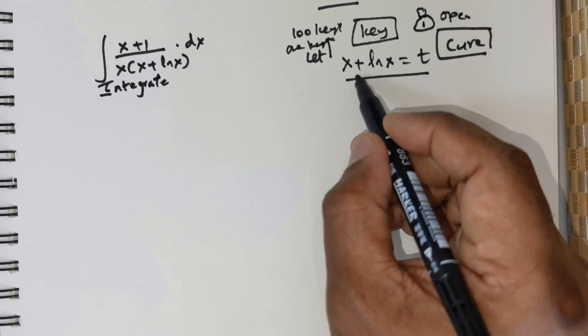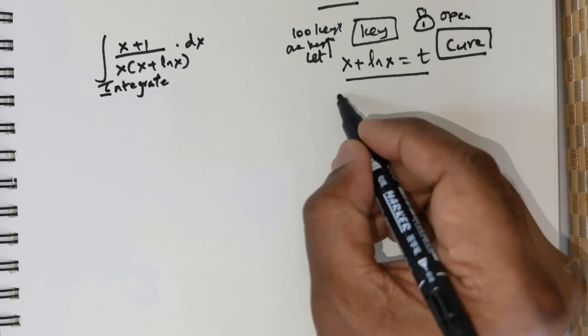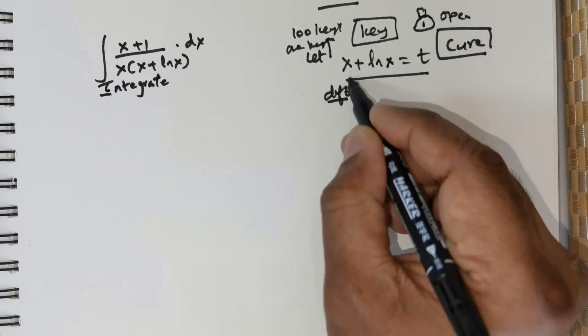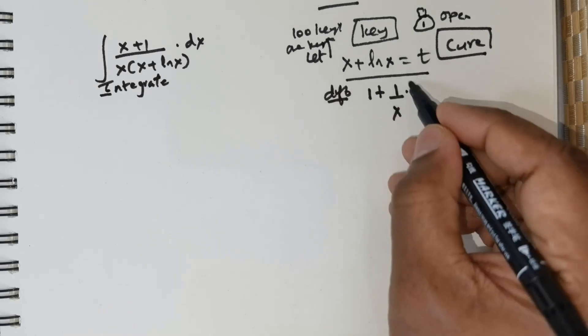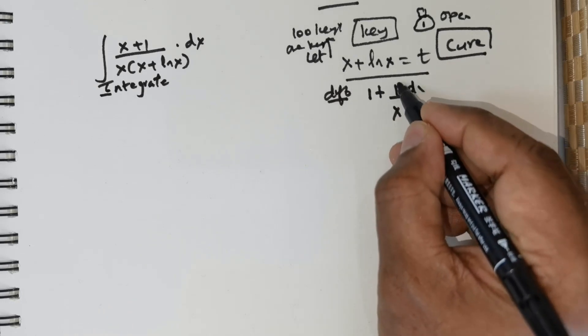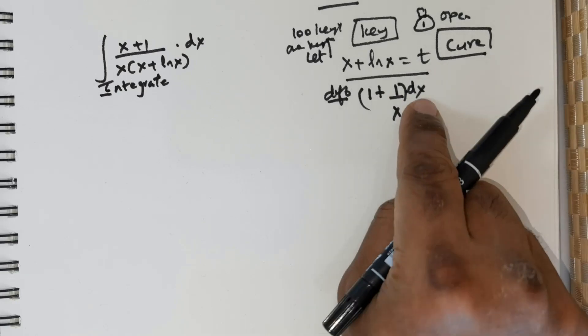So I have made this all-important substitution. Let x + ln x be equal to t. Now if you were to differentiate this, differentiating both sides: differential of x is 1, differential of ln x is 1/x times differentiation of x, that is going to be dx. So you need to write dx like this.